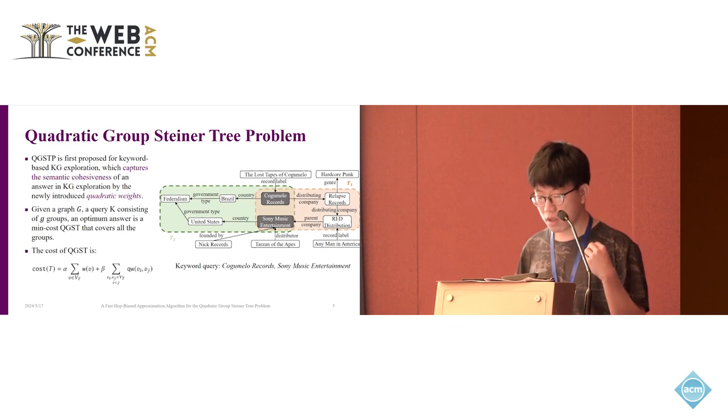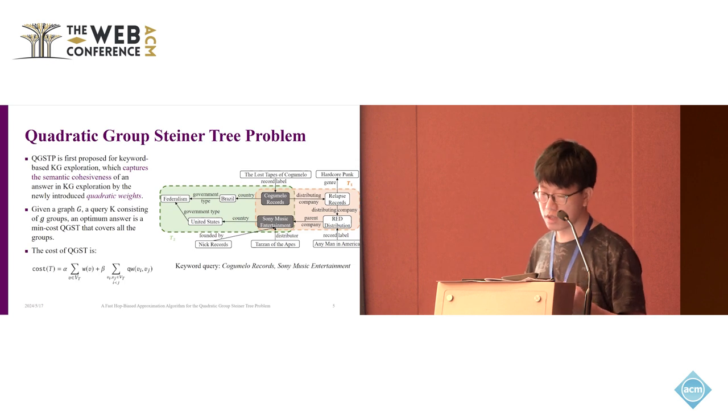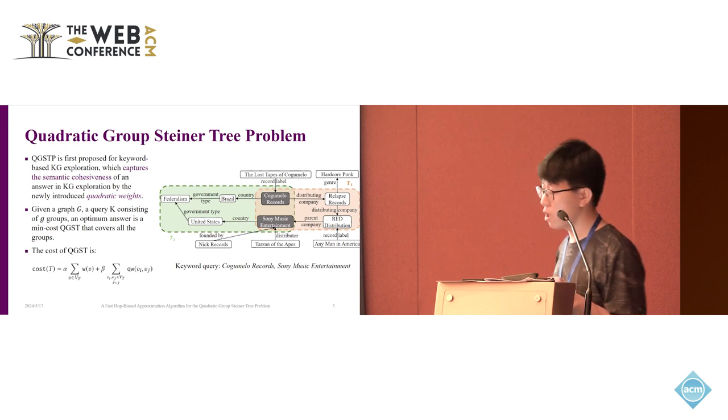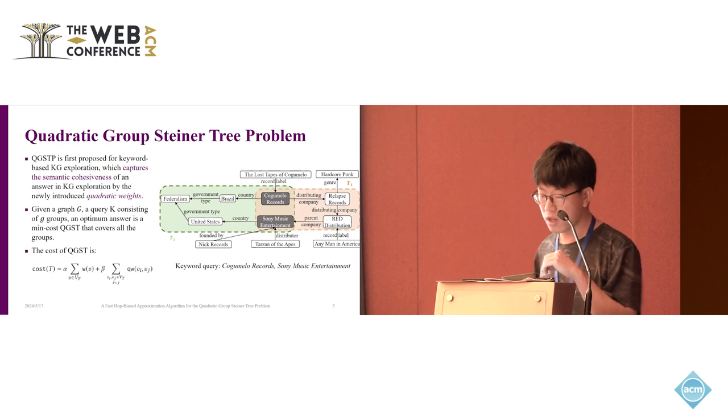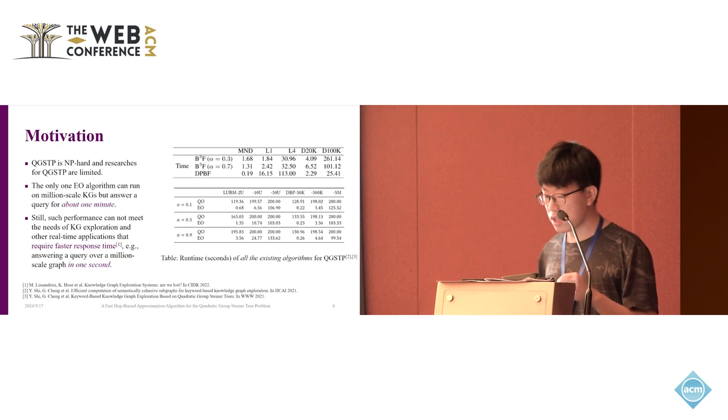If we additionally consider the quadratic weights, the quadratic weights characterize the semantic distance between the two entities. By minimizing the pairwise sum of the pairwise quadratic weights, we should make the answer of the KG exploration more semantically cohesive. So we could find the answers like T1. We could see that T1 includes the closely related companies.